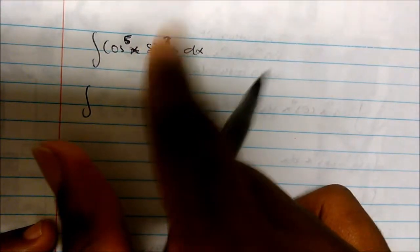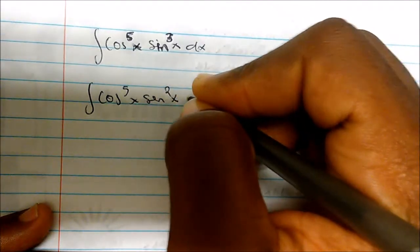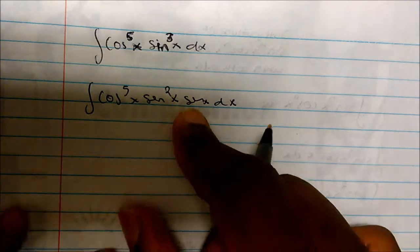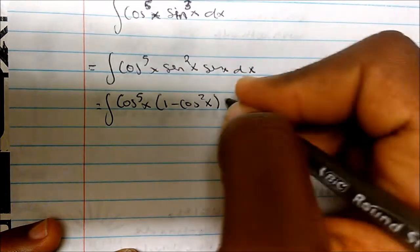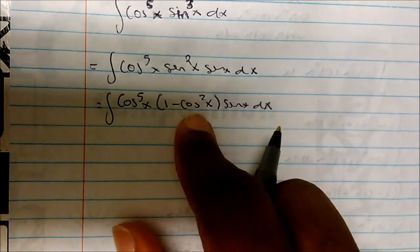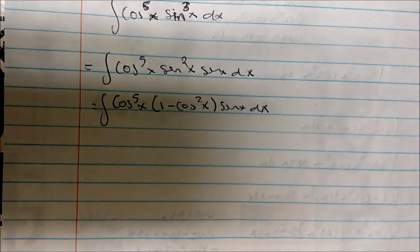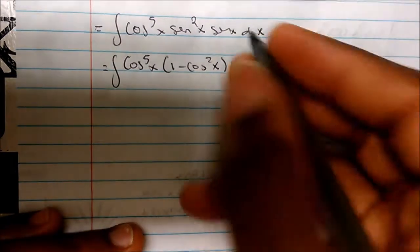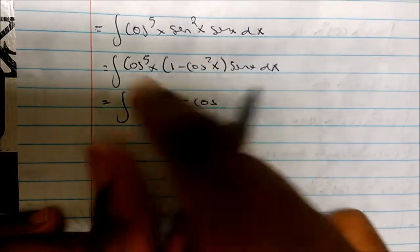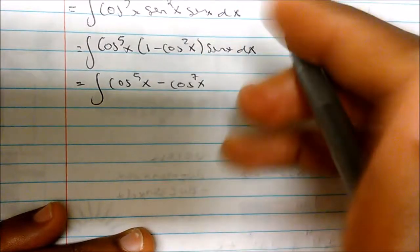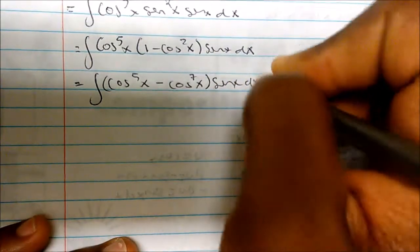I said whenever they're both odd, I'll borrow sine of x — the only thing I did was borrow one. This allows me to use my identity, so I know this integral equals cosine to the fifth of x times 1 minus cosine squared of x times sine of x dx. We know sine squared of x equals 1 minus cosine squared of x. Distributing, this becomes cosine to the fifth of x minus cosine to the seventh of x — since 5 plus 2 equals 7 — times sine of x dx.